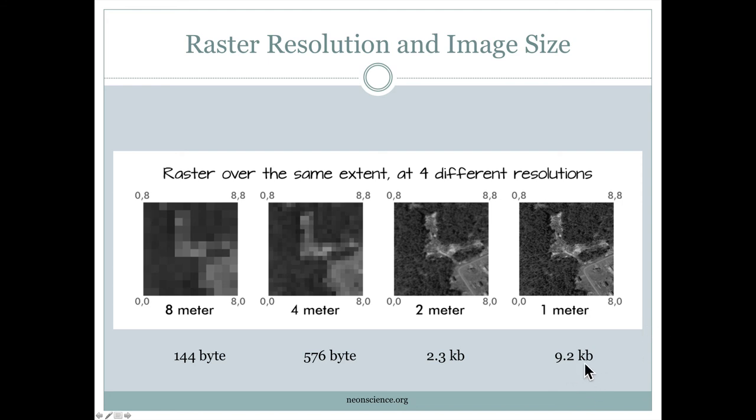But remember going to half a meter would once again double this grid. So would double the size of the file. And of course, this is just showing a small area. So if we were showing a very large area or a color image, that number would get much larger very quickly.